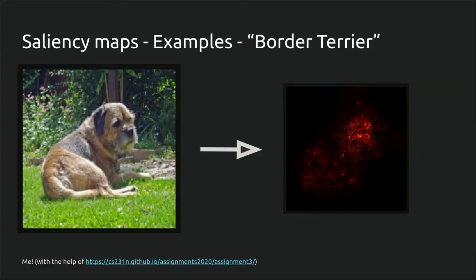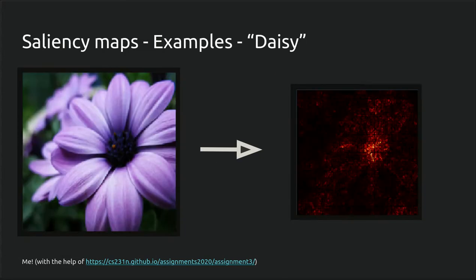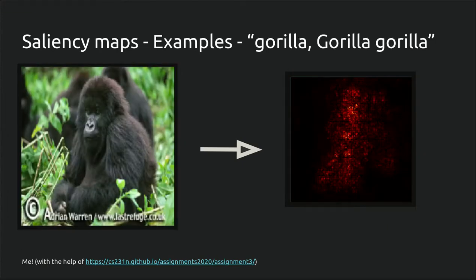So some examples of the saliency maps that my tool outputs. We can see through all of these that the interesting regions of the image really are lighting up and it appears that the network actually is concentrating on the appropriate parts of the image.